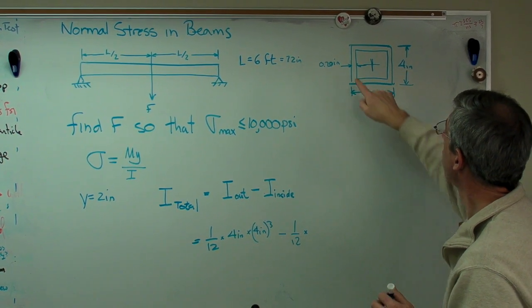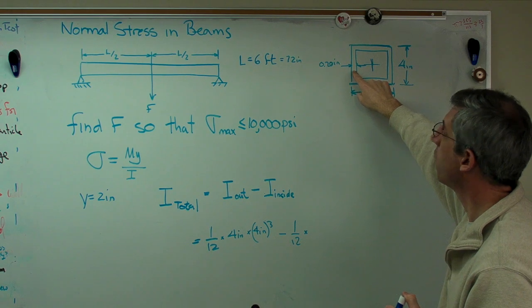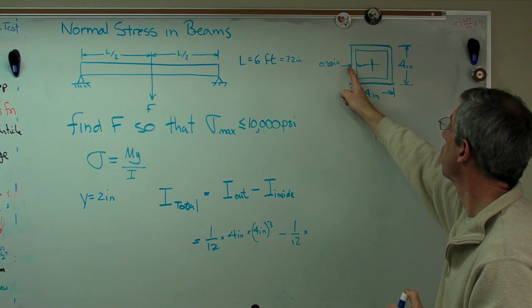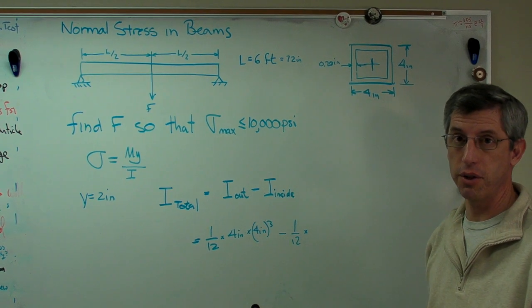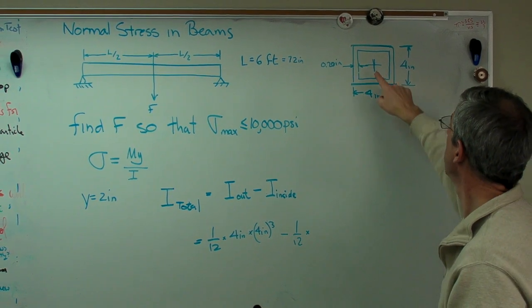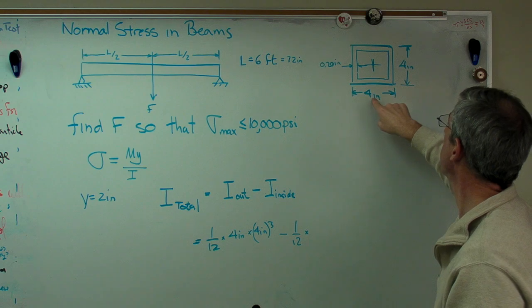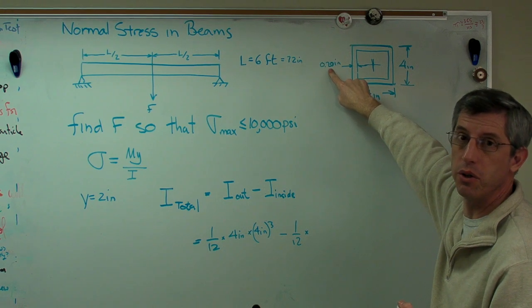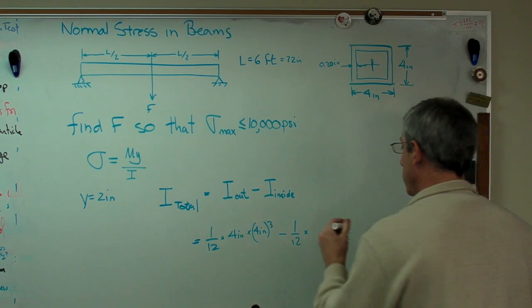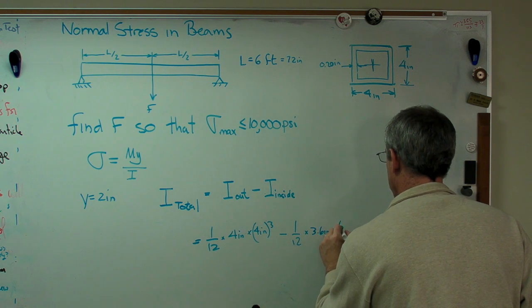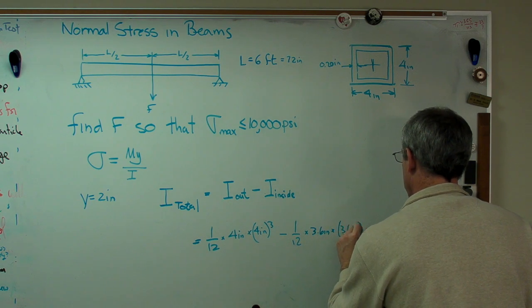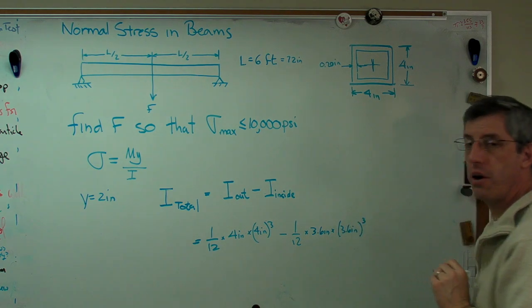The width here is 3.6 inches, and the height is the same. It's not 3.8. My students do this a lot. Sometimes we only subtract the wall thickness once. As you go from here all the way across, you cross the wall twice, so you have to subtract wall thickness twice. So, 4 inches right there minus twice 0.2 inches is 3.6 inches.